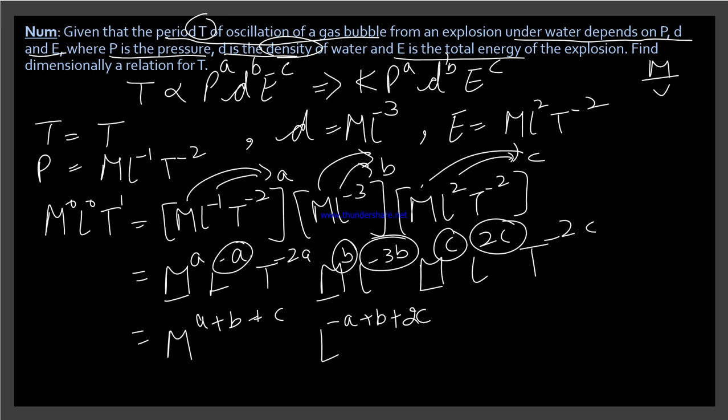So L's power is minus a minus 3b plus 2c. So it becomes minus a minus 3b plus 2c. Then T's values, T will be minus 2a minus 2c.